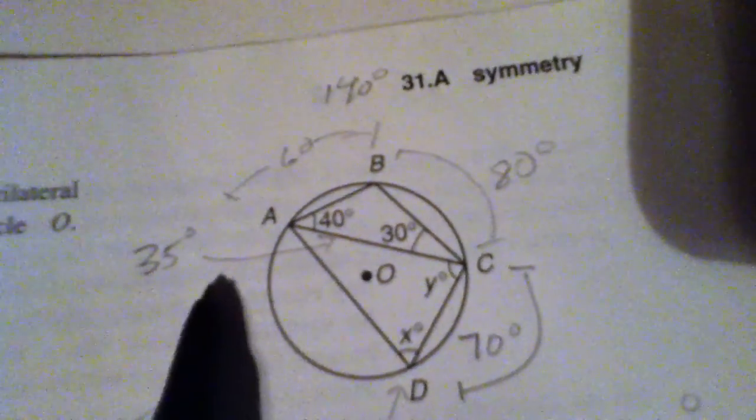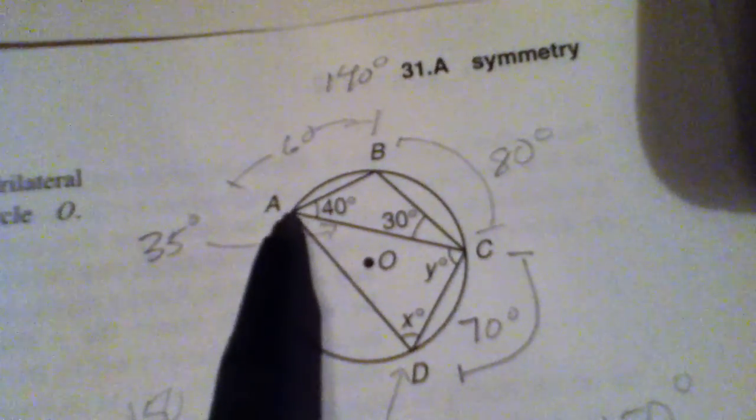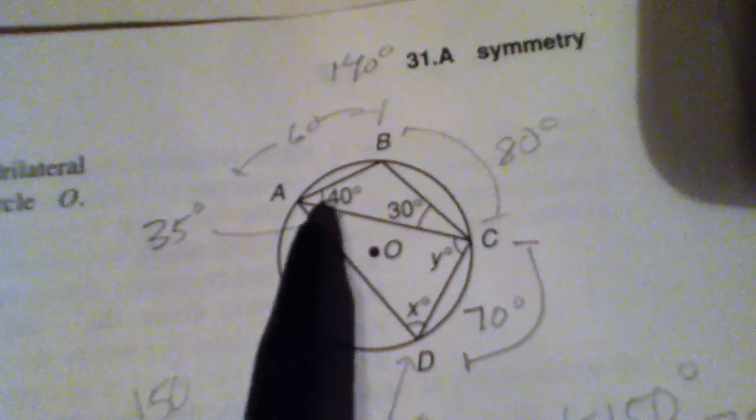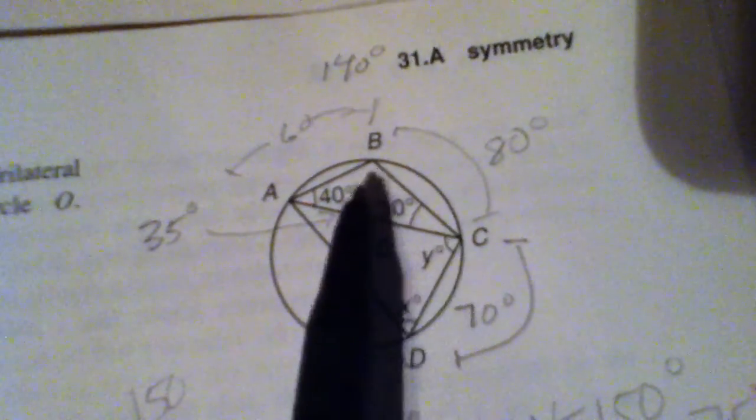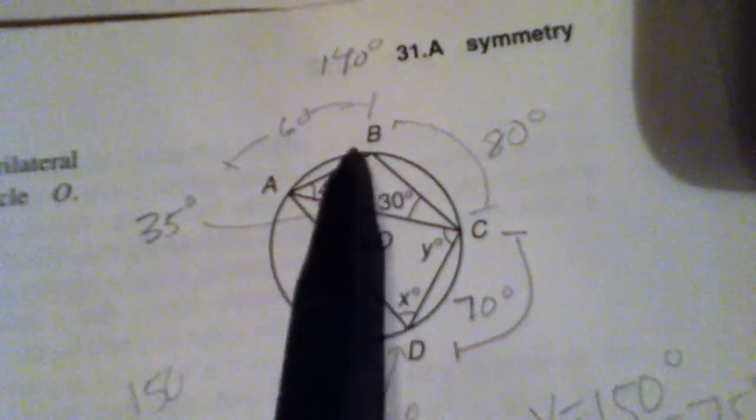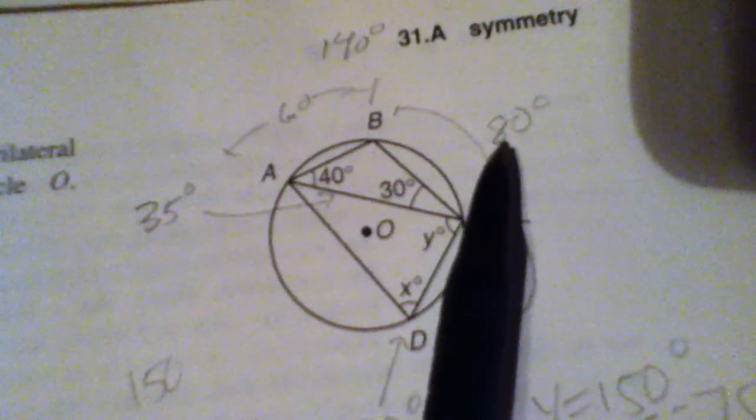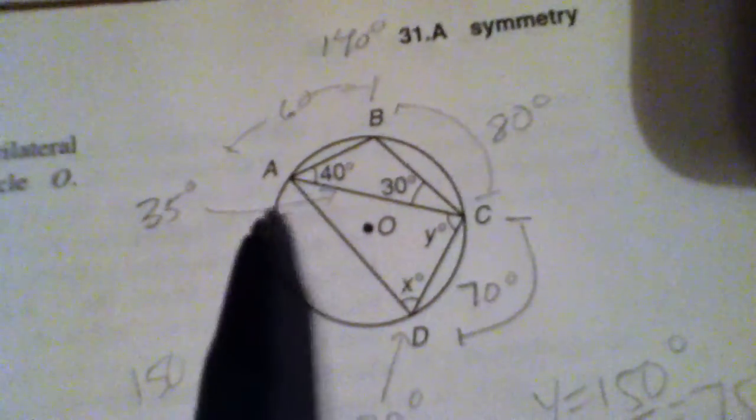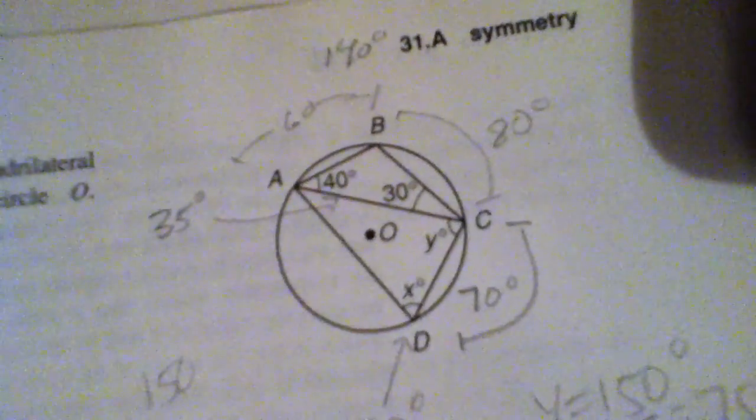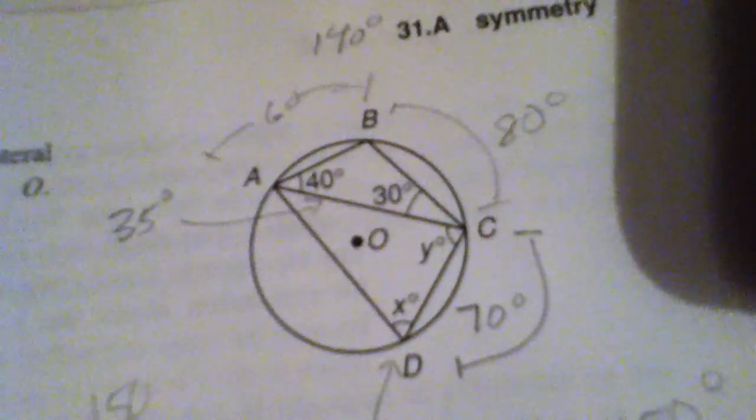Hopefully you can see that. And then angle A is 40 and it's intercepting the circle at B and C. So arc BC is 80, you know, because the inscribed angles are half the measure of the arc they intercept.